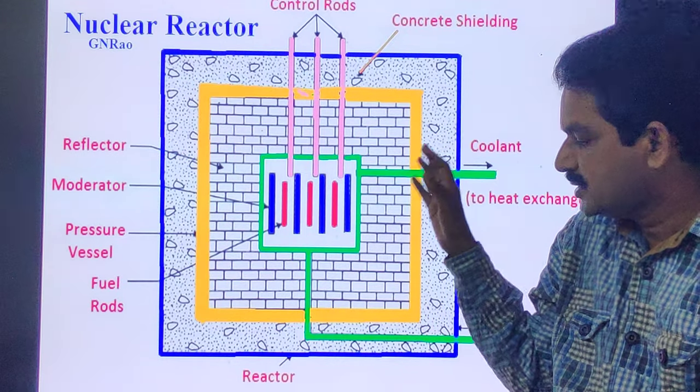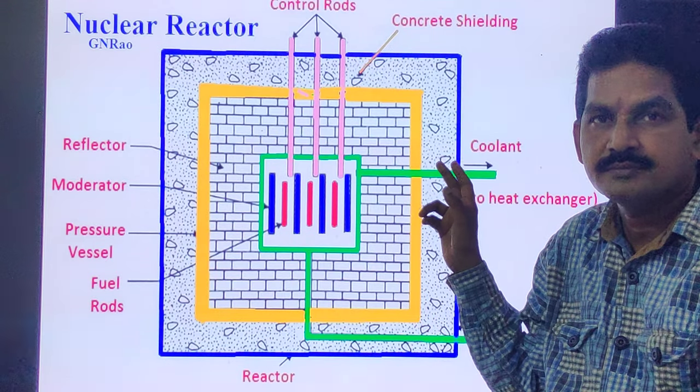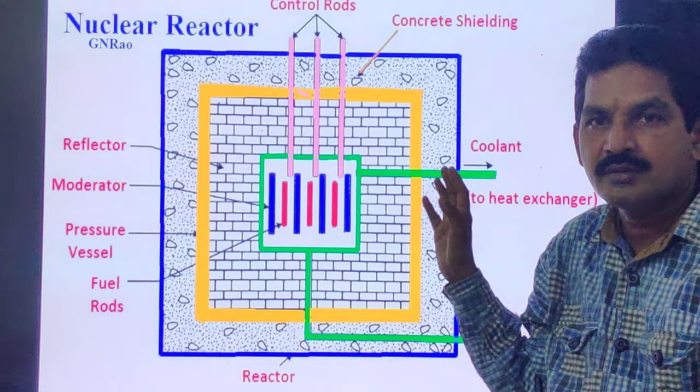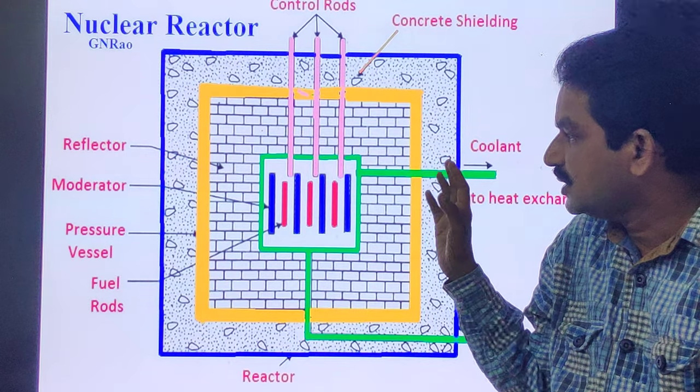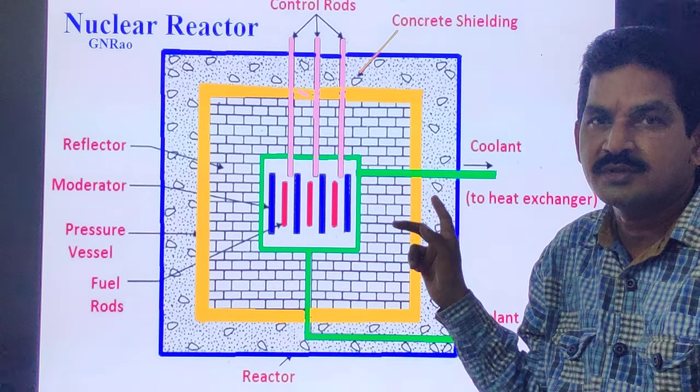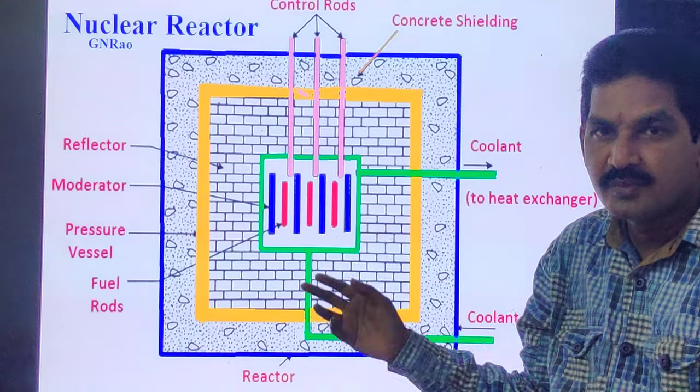This slide shows the reactor core. The core graphite structure is designed to act as a moderator and provide individual channels for fuel, stringer assemblies, control devices, and coolant flow for a minimum period of 30 years.